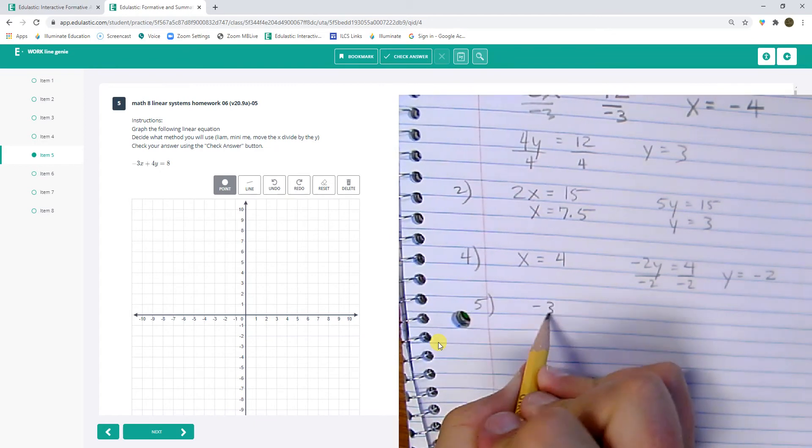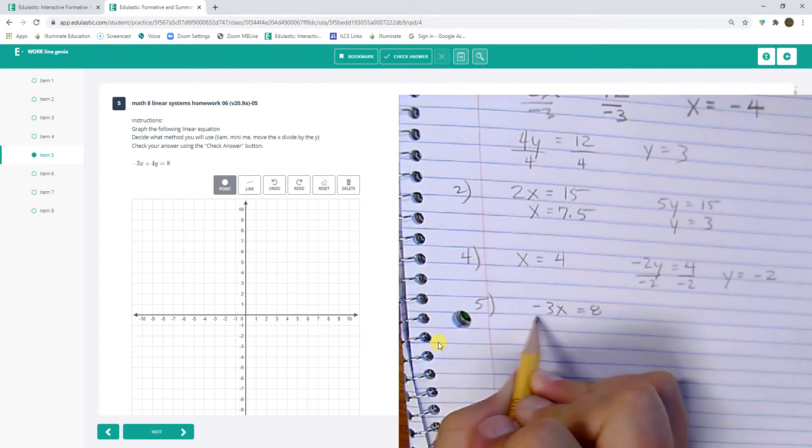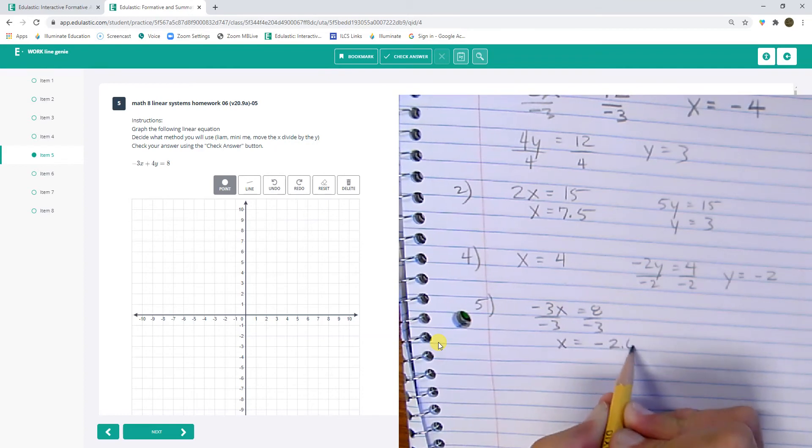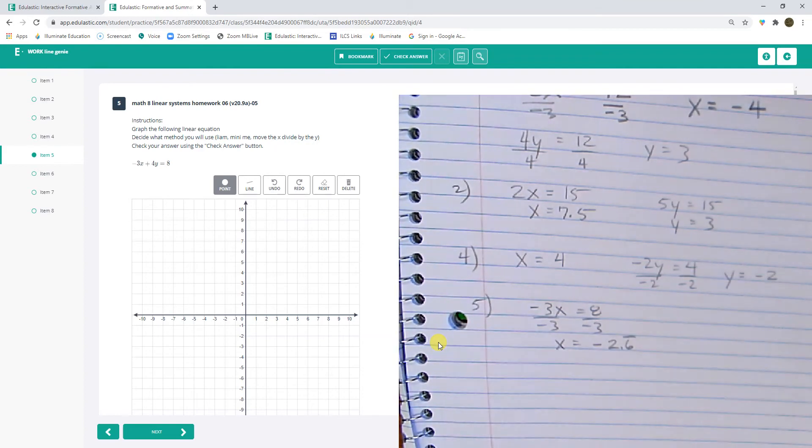Because if I do negative 3x equals 8 and I divide both sides by negative 3, I'm going to get x equals negative 2.6 repeating. That's right. Let me check that math. And I can't graph a negative 2.6 repeating.